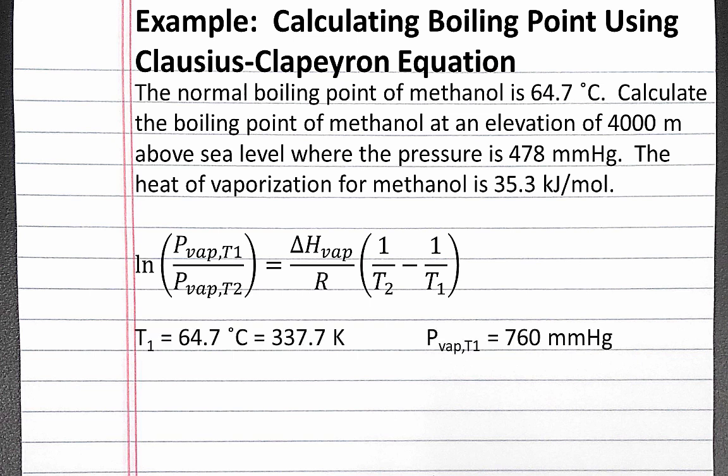We're given the normal boiling point of methanol to be 64.7 degrees Celsius. Boiling point is defined as the temperature at which the vapor pressure of a liquid equals the external pressure, and the normal boiling point is when the external pressure is one atmosphere, or 760 millimeters of mercury. So we'll define T1 as our normal boiling point and convert to Kelvin: 64.7 degrees Celsius is 337.7 Kelvin. We'll use a vapor pressure at T1 of 760 millimeters of mercury, which is one atmosphere.